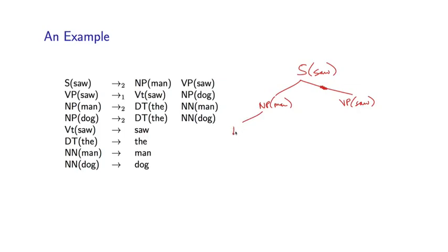Then NP(man) could go to DT(the), NN(man), for example. So I've used this rule, and now I'm using this rule. Again, let's mark the head.